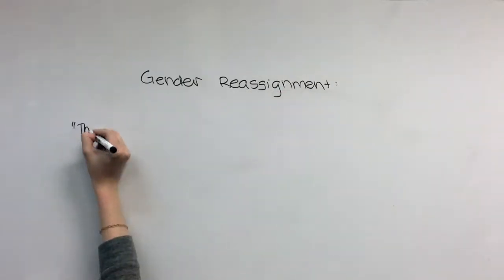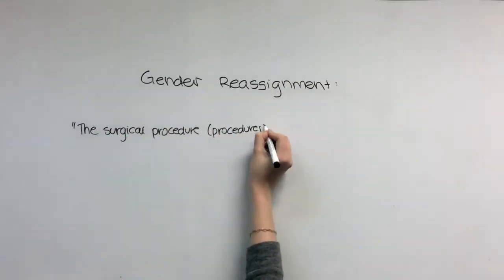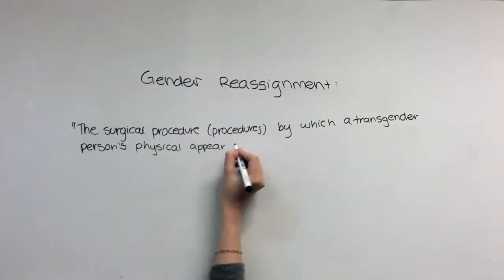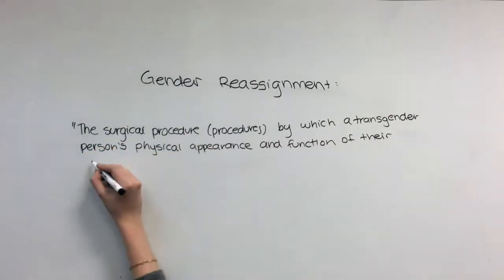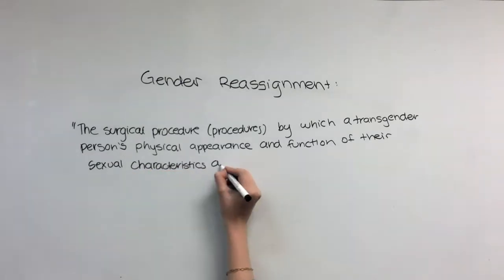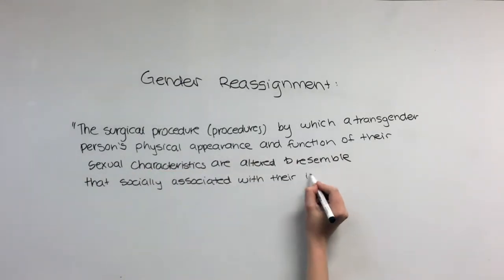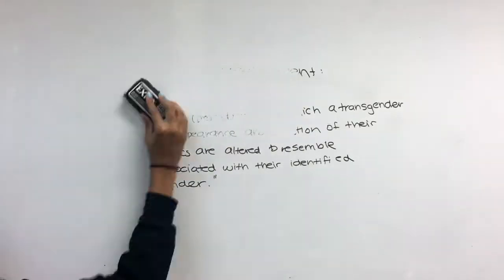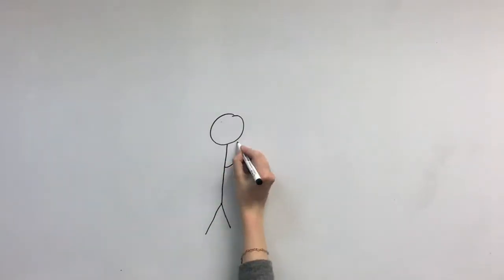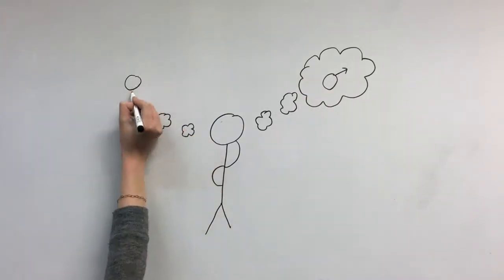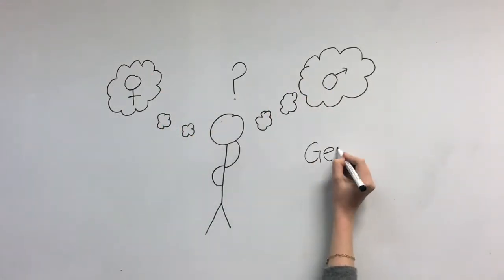Gender reassignment is a surgical procedure by which a transgender person's physical appearance and function of their existing sexual characteristics are altered to resemble that socially associated with their identified gender. This bioethical topic is used as a treatment for gender dysphoria, which is the uncertainty of one's gender assigned to them at birth.